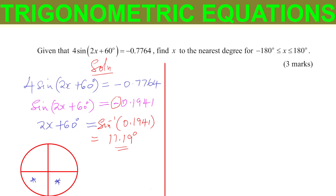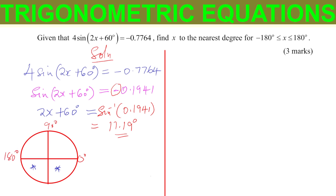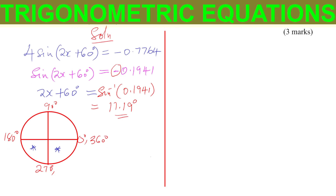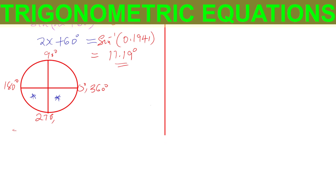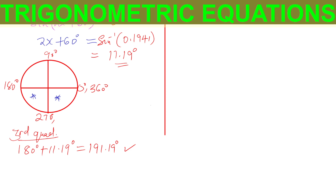The first angle is located in the third quadrant. Remember the unit circle goes 0, 90, 180, 270, and 360 degrees. To get the angle in the third quadrant, we take 180 degrees plus the acute angle of 11.19 degrees, which gives 191.19 degrees.